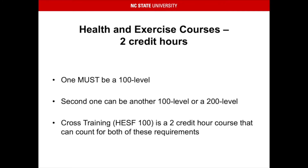Your health and exercise courses total two credit hours of your GEPs. One must be a 100 level. The second one can be another 100 level or a 200 level. Cross-training, HES 100, is a two credit hour course that can count for both of these requirements.